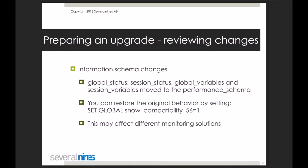There is a way to handle this: you can set the variable show_compatibility_56 to 1 to enable it, and then the behavior will be reverted. But it is important that you either upgrade your monitoring and trending tools to a version which supports 5.7, or introduce the changes on your own — for example, instead of querying information_schema.global_status you should query performance_schema.global_status. Not a big deal, but this change has to be made so you won't be affected in the future.